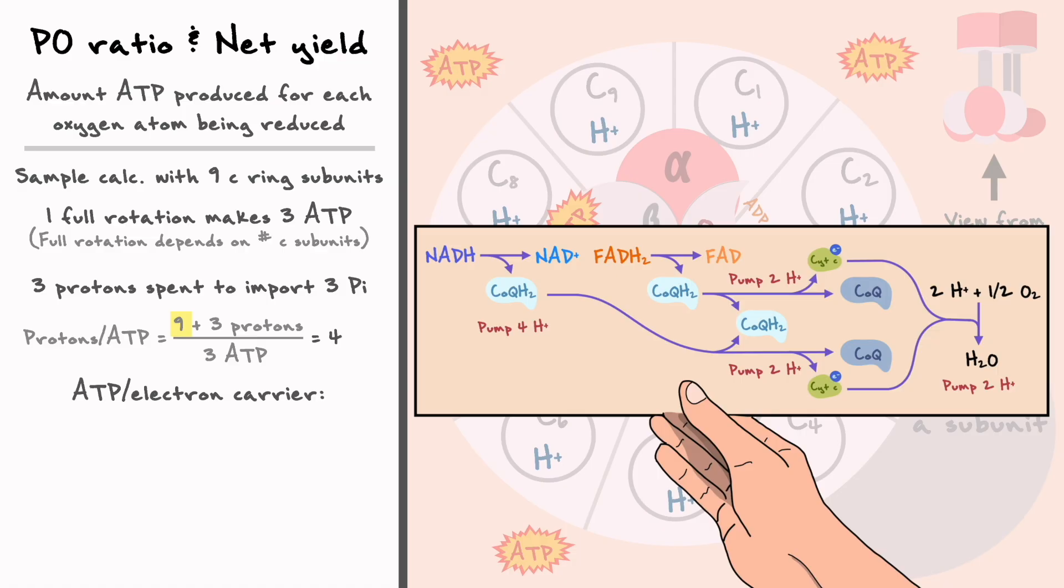To obtain that ratio, we need to know how many protons does NADH and FADH2 pump in the intermembrane space. The conventional value for that is 10 protons per NADH, as complex 1 and 3 each pump 4 protons, and complex 4 pumps 2. For FADH2 however, the value is 6 protons since complex 2 does not pump any protons.